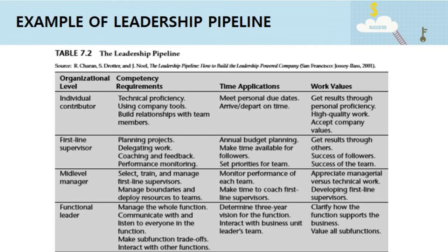As an example of the leadership pipeline, based on Table 7.2, there are four organizational levels: first, individual contributor; second, first-line supervisor; third, mid-level manager; and fourth, functional leader. Each of the organizational levels has its own competency requirements, time applications, and work values.